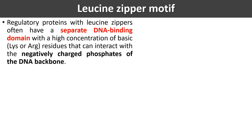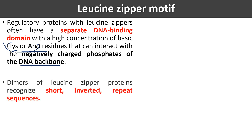Regulatory proteins with the leucine zipper often have a separate DNA-binding domain with a high concentration of basic residues — that is, lysine and arginine — that can interact with the negatively charged phosphate of the DNA backbone. DNA is acidic because of the phosphate groups and is negatively charged. Lysine and arginine are basic amino acids which are positively charged, so these positively charged amino acids bind with the negatively charged DNA backbone.